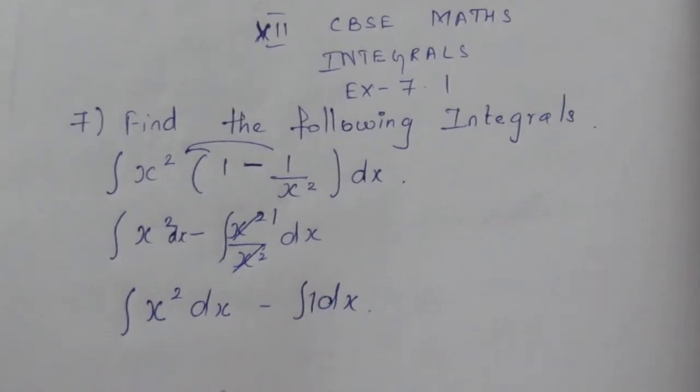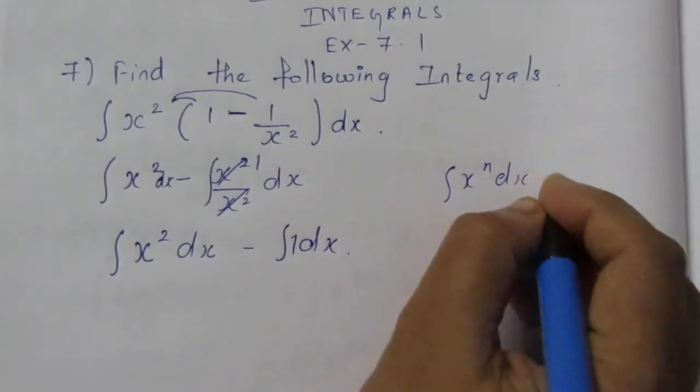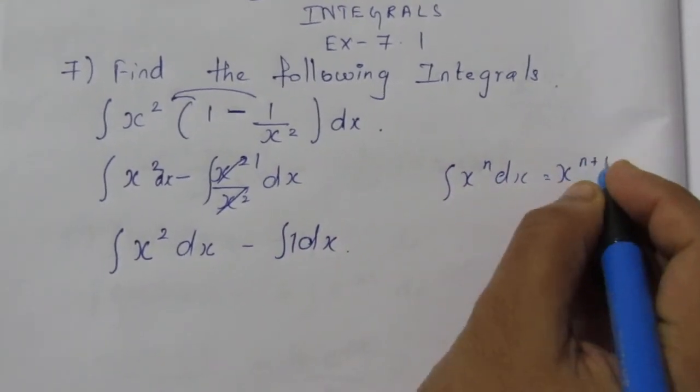The integration rule for this is: anything to the power n, the integration of x^n dx is x^(n+1)/(n+1).